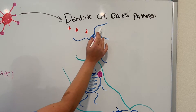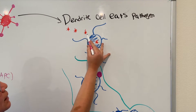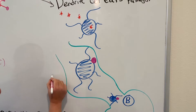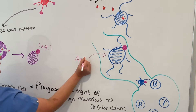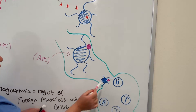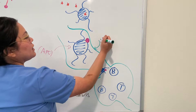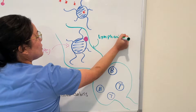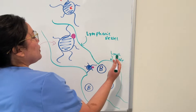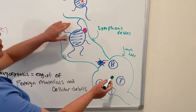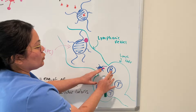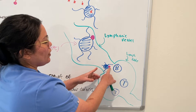The macrophage basically lets other cells know, hey, look at this antigen. On the other side, the dendritic cell also undergoes phagocytosis — it eats the pathogen and takes its antigen and presents it on its membrane. So the dendritic cell is also an antigen presenting cell, an APC. The difference is that the dendritic cell is going to travel to the lymphatic system. This is a lymphatic vessel and this is a lymph node. Within the lymphatic node you're going to find B cells and T cells.